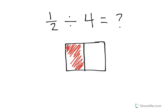Now, what I'm going to do in order to represent this is what we know about division. We're going to take our original amount, in this case 1 half, and we're going to split it into 4 equal pieces.